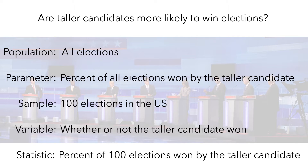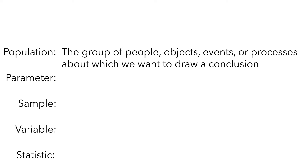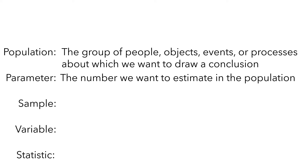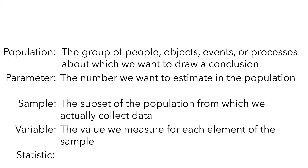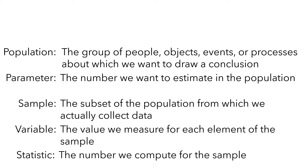To clarify what each of these terms means, let's look at some definitions. The population is the group of people, objects, events, or processes about which we want to draw a conclusion. The parameter is the number we want to estimate in the population — this is what we really care about. We want to know something about the entire population, but we rarely have the resources to actually survey the entire population to directly measure the parameter. Instead, we can only estimate its value. The sample is the subset of the population from which we actually collect data. The variable is the value we measure for each element of the sample. The statistic is the number we compute for the sample — it is usually a percentage or an average, but it can be other numerical measures too. We use the statistic to estimate the value of the parameter.